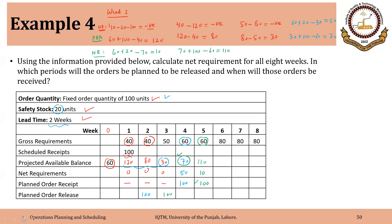For week six, we are having negative net requirements. Keep in mind that the number should be incorporating the safety stock as well — we should be having at least 20 units available. We are actually having 30 units available, so the net requirements are negative — that is 80 minus 110, which is negative 30. After meeting the requirement of 80, we are left with 30 units, and again it should be at least 20.